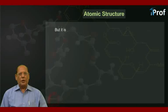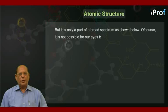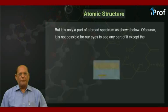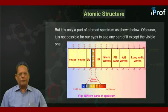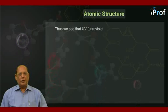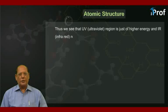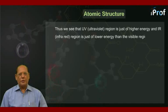But it is only a part of a broad spectrum as shown below. Of course, it is not possible for our eyes to see any part of it except the visible one. Thus, we see that UV, the ultraviolet region, is just of higher energy and IR, the infrared region, is just of lower energy than the visible region.